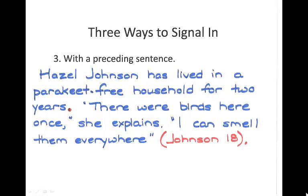The final way to signal into a quote is to use a whole sentence to establish the speaker's credibility before you give their quote. So you end the sentence, then begin your quote. It's generally best at the end or in the middle to note that you're trying to provide some sort of reference back to the speaker. To emphasize: the quote comes before the citation, and the period comes after the documentation.